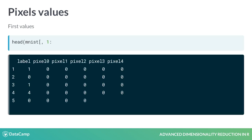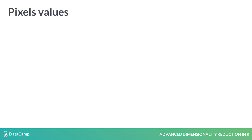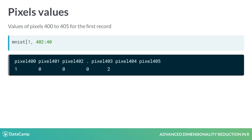Let's have a look at the first 6 records and columns. As another example, we are showing the values of pixels 400 to 405 for the first record. Note that we are selecting columns 402 to 407, because the first column is the label, and the pixels start at 0. Remember that each pixel is an integer between 0 and 255, indicating its lightness or darkness.